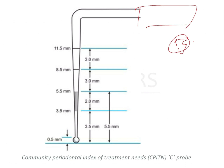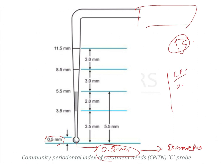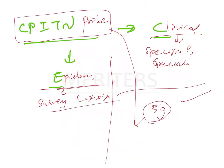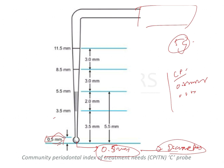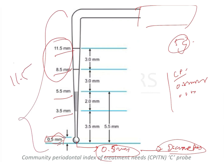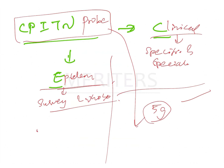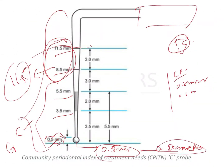The tip is designed with a ball end having 0.5 mm diameter — this is very important because exam questions ask about the tip of the CPITN probe, with options like 0.5 mm radius or 0.5 mm diameter; the correct answer is 0.5 mm diameter. The other markings on the probe include 3.5, 5.5, 8.5, and 11.5. The difference between clinical and epidemiological probes is that 8.5 and 11.5 markings are not present in the epidemiological probe; it includes only the first three values, whereas the clinical probe includes all five.